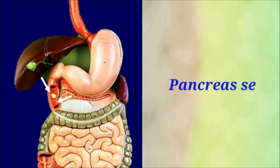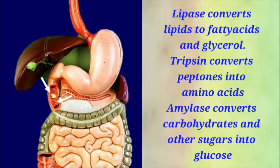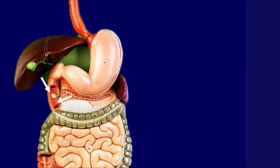The pancreas secretes pancreatic juice, which contains trypsin, lipase, and amylase. Lipase converts lipids to fatty acids and glycerol, trypsin converts peptones into amino acids, and amylase converts carbohydrates and other sugars into glucose.